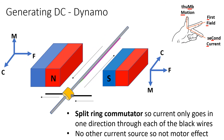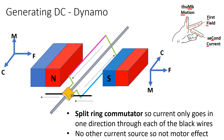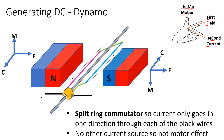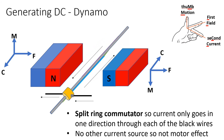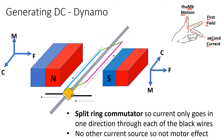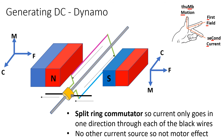When we go to DC, you can see that we have got rid of our slip rings and we now have brought back in the split ring commutator. What that means is that the current is always flowing in one direction, just as it is in the motor effect. However, unlike the motor effect, there is no current being supplied to the wire — the only current in the wire results from the induced potential difference as the wire cuts through the magnetic field lines.